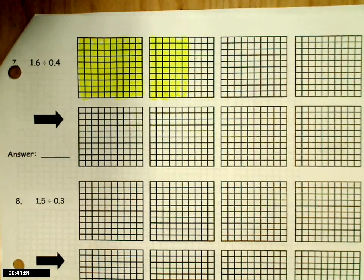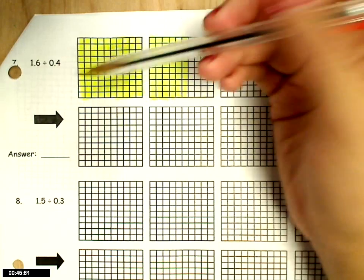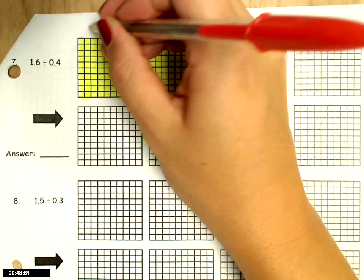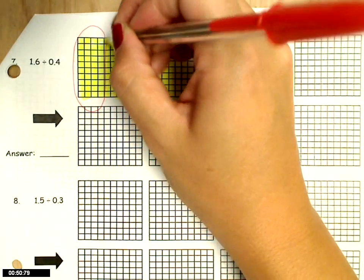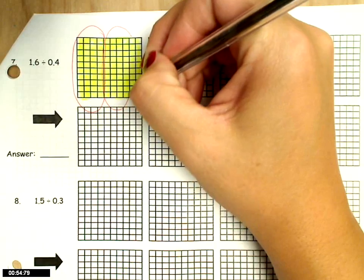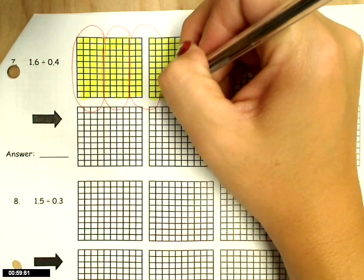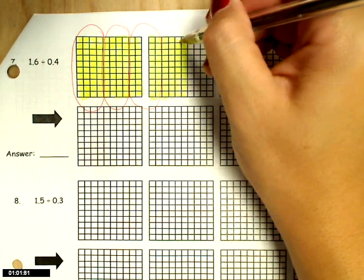So I will take my pen and count 4 tenths and make a loop around them. 1, 2, 3, 4. 1, 2, 3, 4. 1, 2, 3, 4. And 1, 2, 3, 4.